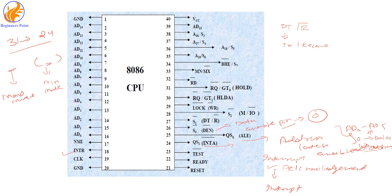Pin number 28 is the M/IO pin, which stands for Memory and Input/Output. When this pin is set to one, it means the system needs to access or extract data from memory. When the status of this pin is zero, it means the system needs to collect data from the input/output devices.